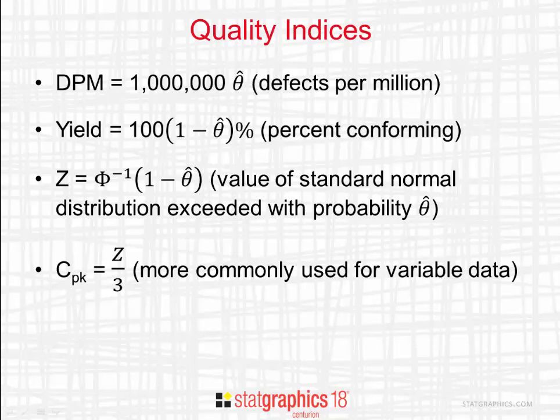If we take the value of Z and divide by 3, we get the index Cpk. Lots of companies are used to calculating Cpk, especially when they're analyzing variable data. They have rules like Cpk should be at least 1.33 or perhaps at least 1.5. It's still a useful index though for attribute data because it's linked directly to the proportion of nonconforming items.